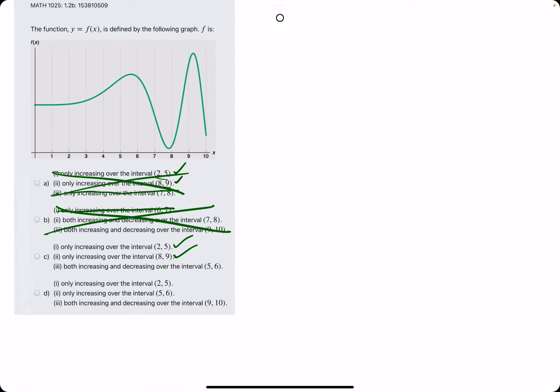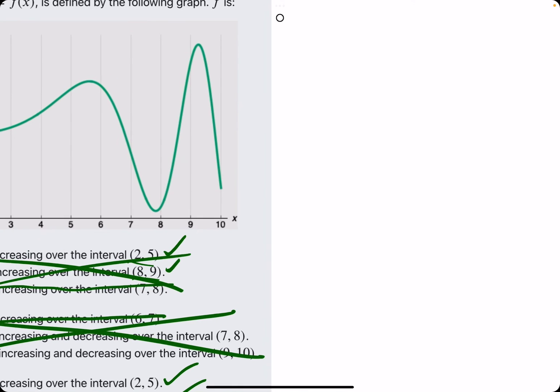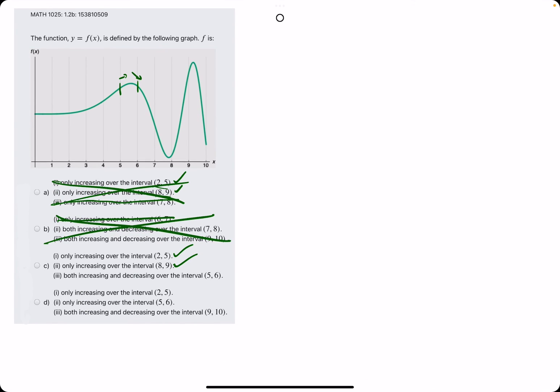And then they say both increasing and decreasing over 5 to 6. Let's investigate. Between 5 and 6, it starts off increasing, and then it changes to decreasing just before 6. So that statement is true.